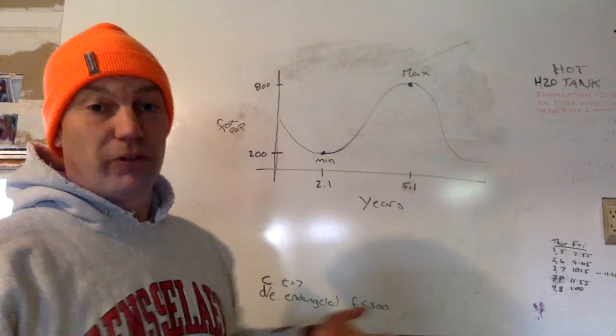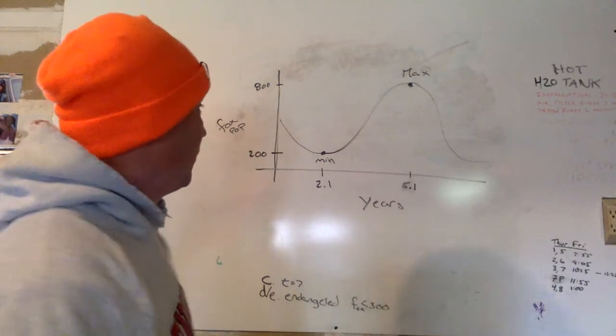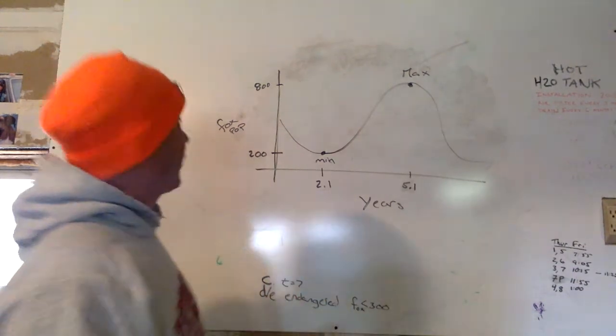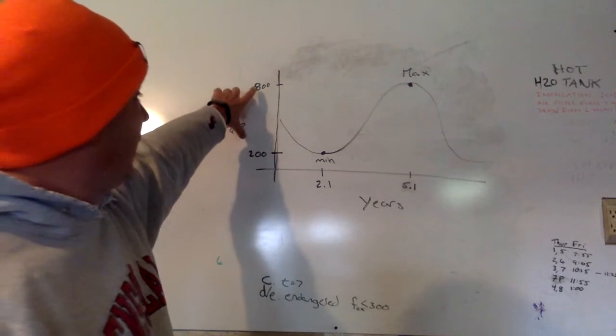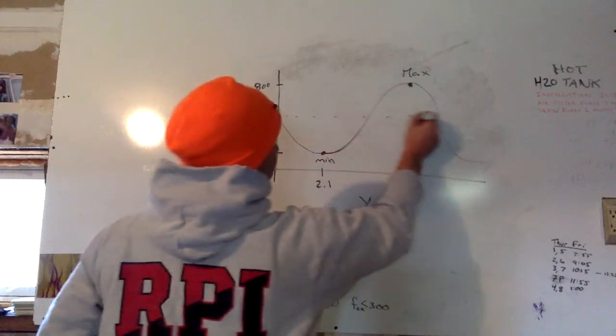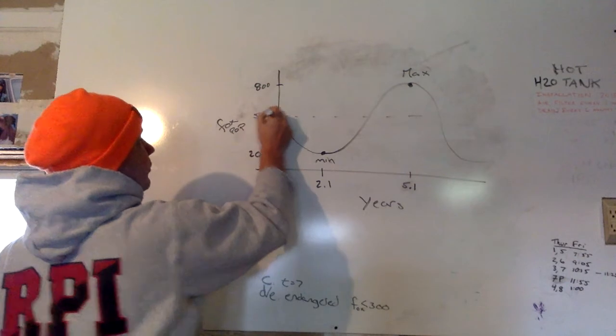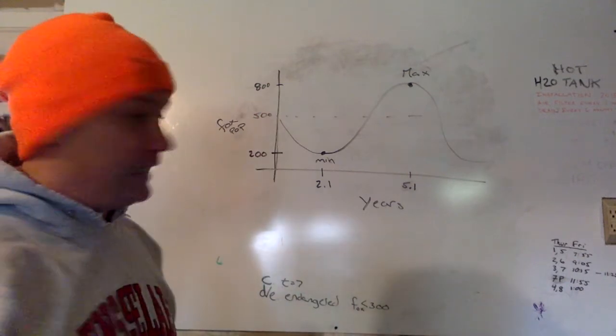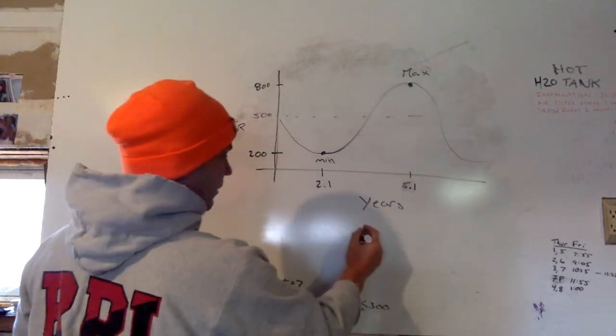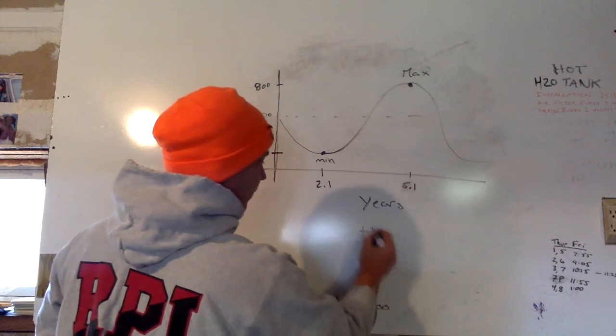So the first question is, write an equation for this. Well, I'm going to start with the easy stuff. I know that the middle of my graph is 500. So that's my d. So I'm going to write my equation right here, plus 500.